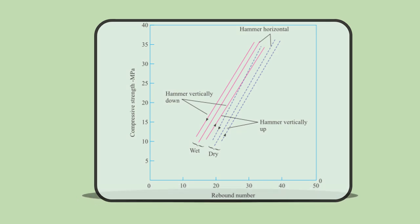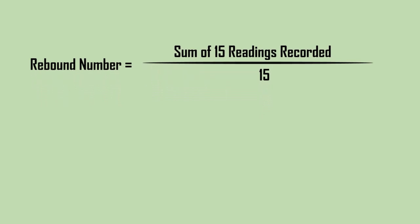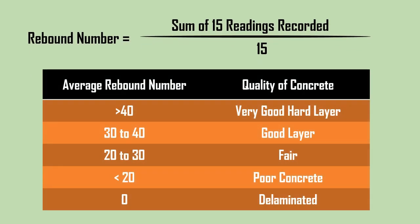The value of rebound number is taken as an average of 15 readings. The table shown on the screen shows the average rebound number and quality of concrete.